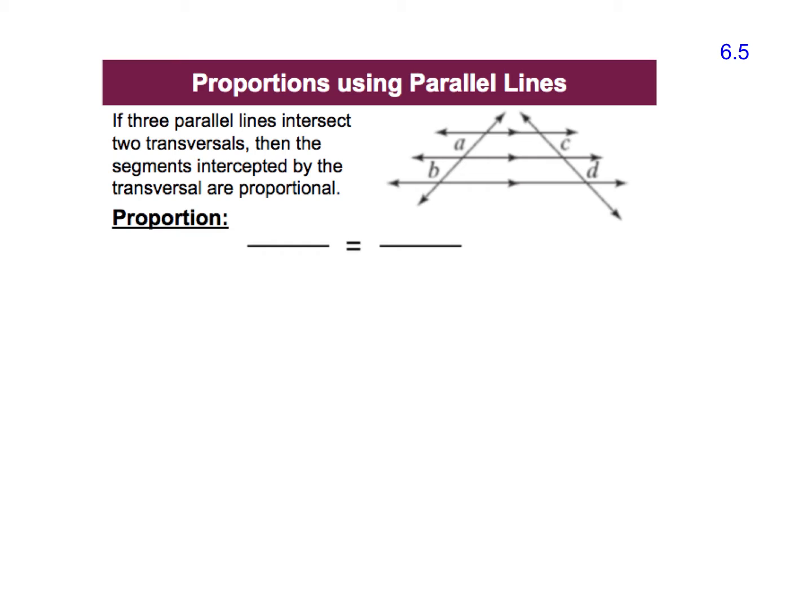This theorem tells us that if three parallel lines intersect two transversals, then the segments that are intercepted by the transversal are proportional.